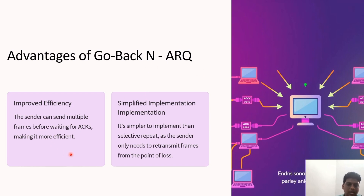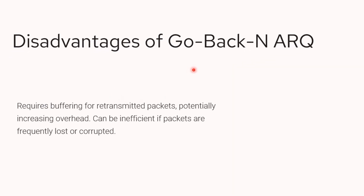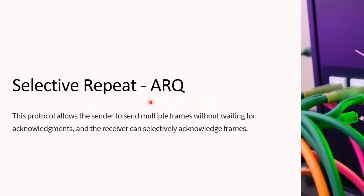The advantage of Go-Back-N ARQ is improved efficiency, as it can send multiple frames before waiting for acknowledgement, and implementation is simple since the sender only retransmits frames from the point of loss. The disadvantage is that it requires a buffer for retransmission, because instead of sending only the lost frame, it must send all frames present in the window.